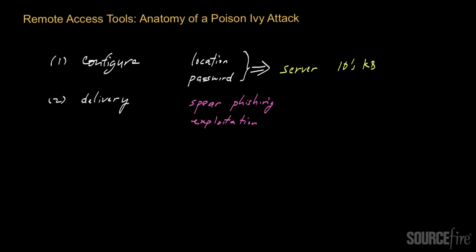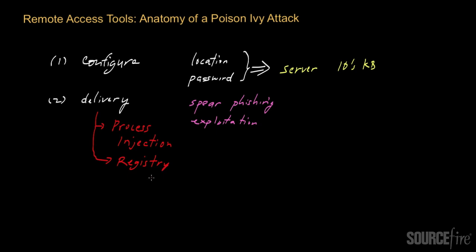When the poison ivy server is installed onto the victim's system, it basically tries to hide its own traces via a number of mechanisms. For example, poison ivy is known to use techniques like process injection, whereby it can hide itself by effectively co-opting an existing Windows process. It also tries to maintain a degree of persistence on the system — for example, it will place registry keys in locations whereby whenever the system is booted up, the poison ivy server will then launch on startup.